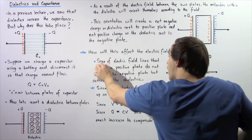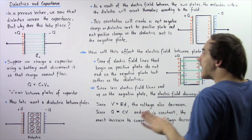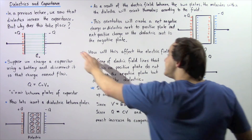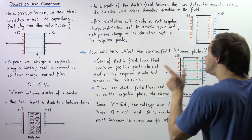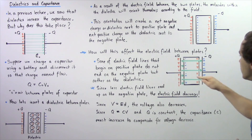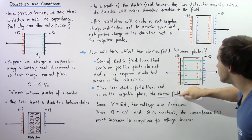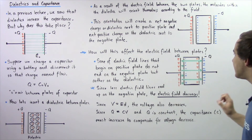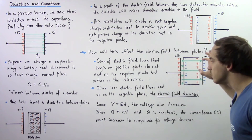So some of the electric field lines that begin on the positive plate will not extend all the way to the negative plate, but rather will end up on the dielectric on the negative side of the dielectric, as shown in the following diagram.